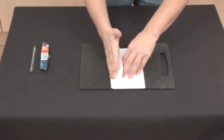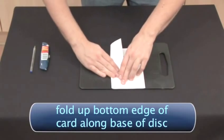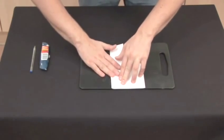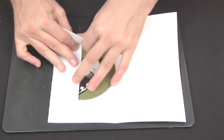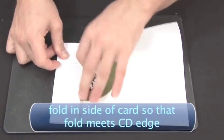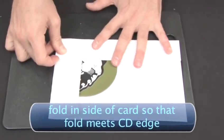Follow this by folding up the bottom edge of the card, again along the base of the disc, resulting in a large flap and a small flap. Open the larger flap back out and fold in one side of the card so that the fold meets the CD edge.